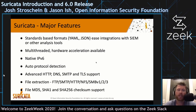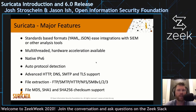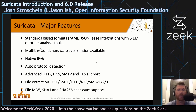One of the bigger features — or at least one of the more talked about — is multi-threading and some hardware acceleration. There is native IPv6 support and auto-protocol detection, which is a really awesome feature. For example, if you want to look for TLS traffic, instead of saying alert TCP port 443, you can just say alert TLS, and regardless of what port the TLS traffic is identified on, it can find it and generate the alerts.